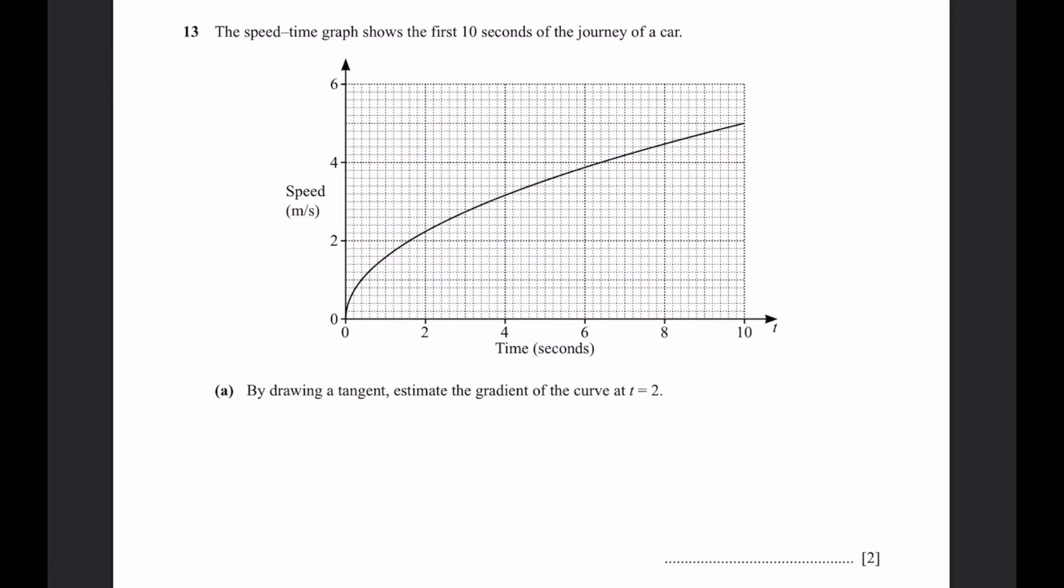Question 13: The speed time graph shows the first 10 seconds of the journey of a car. Part A, by drawing a tangent, estimate the gradient of the curve at t equals 2. We need to use the ruler and place it so that it only touches the point on this curve where t equals 2. It should only touch this. The tangent should only barely touch that point and not touch any other points. Now this tangent, let's just take the point over here which is 2, 2.2. And the point intersecting the y-axis or the speed axis is going to be 0 in the x-coordinate and the y is around 1.2.